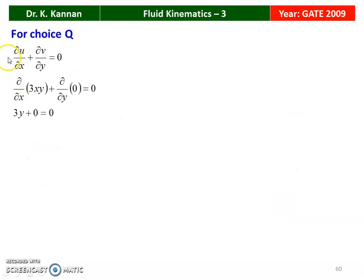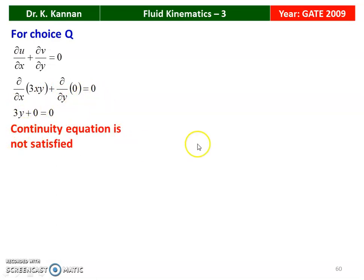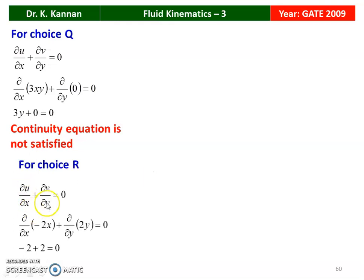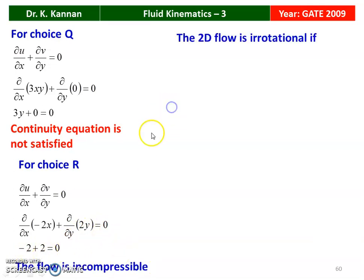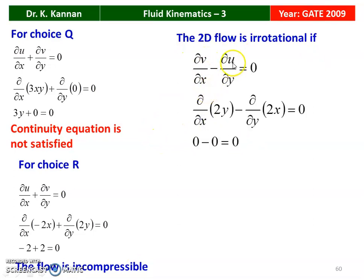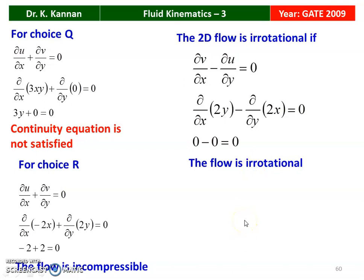For choice R, the continuity equation: ∂(-2x)/∂x + ∂(2y)/∂y = -2 + 2 = 0, so the flow is incompressible. For the irrotational condition: ∂v/∂x - ∂u/∂y = ∂(2y)/∂x - ∂(-2x)/∂y = 0 - 0 = 0, so the flow is irrotational. Both conditions are satisfied only by choice R — the flow is incompressible and irrotational only for choice R, which is the correct answer.